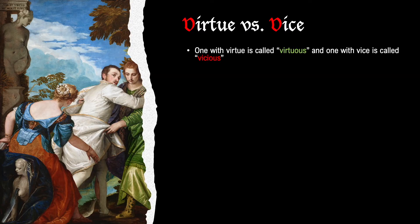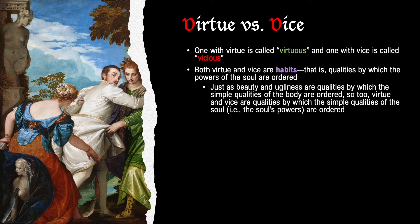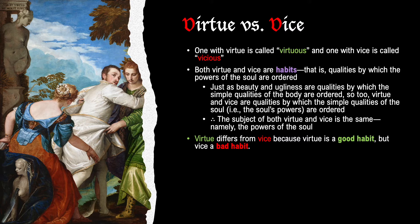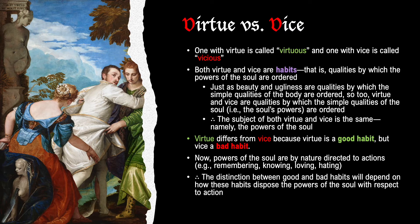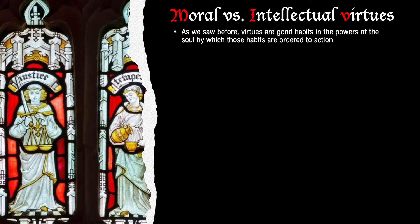Someone who has virtue is called virtuous, and someone who has vice is called vicious. Both virtue and vice are habits — qualities by which the powers of the soul are ordered. Virtue differs from vice because virtue is a good habit, but vice a bad habit. Powers of the soul are by nature directed towards actions: remembering, knowing, loving, and hating. Therefore, the distinction between good and bad habits will depend on how those habits dispose the powers of the soul with respect to action.